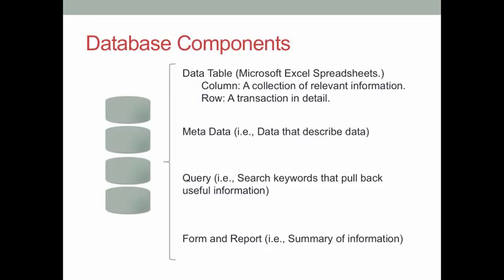A column is a category of relevant information. For instance, we record all of our customers' last names in the last name column in a data table. A data row records the transaction data in detail. For instance, if we opened an e-commerce website, once a customer places an order, we need to record the customer's first name, last name, what kind of product he bought, his mailing address, and contact information in one row.